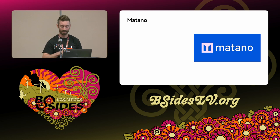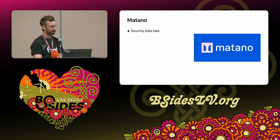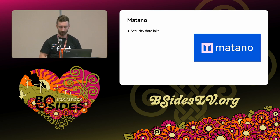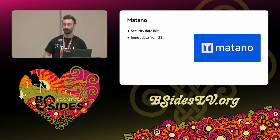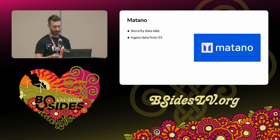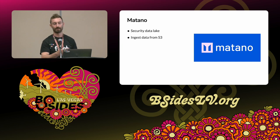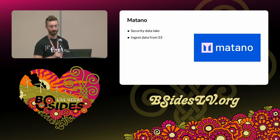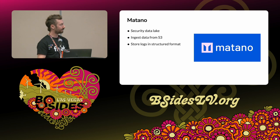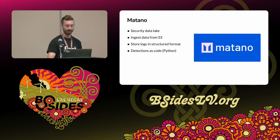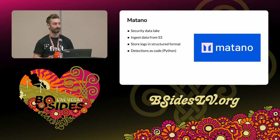The last tool that we'll talk about in this stack is called Matano. Matano is a security data lake, comparable with something like a Snowflake or a Splunk. It's primarily designed to ingest data from S3 — it can also automatically ingest from a number of data sources within AWS, GitHub, and a number of other tools. For our case, it's really ingesting the data from S3 because OS Query and Fleet can write the data into S3. That's our connection point here. Matano stores the logs in a structured format and then allows us to write detections as code.